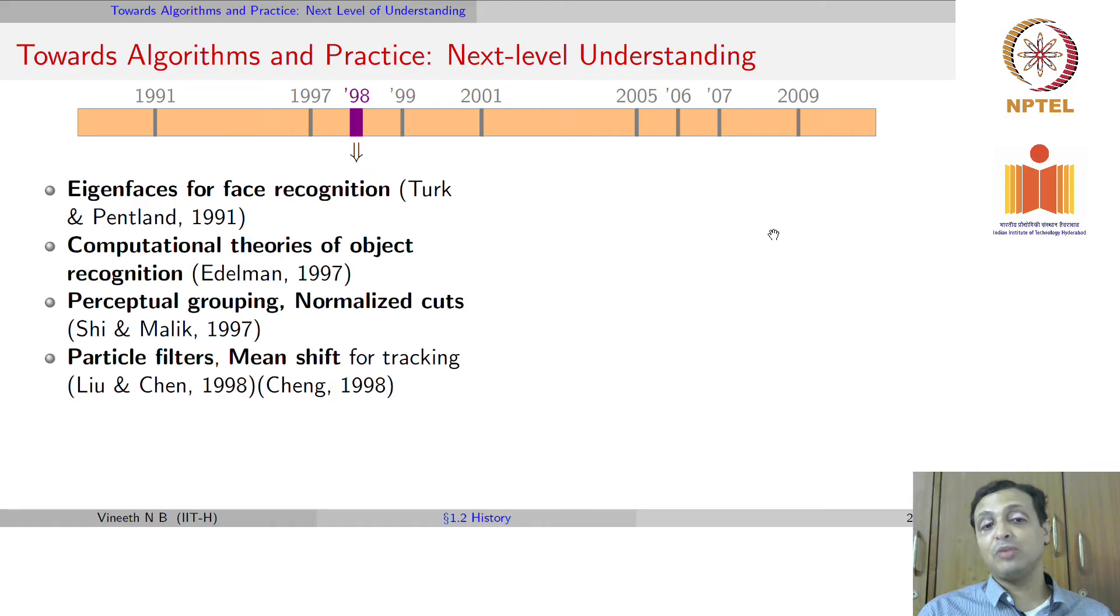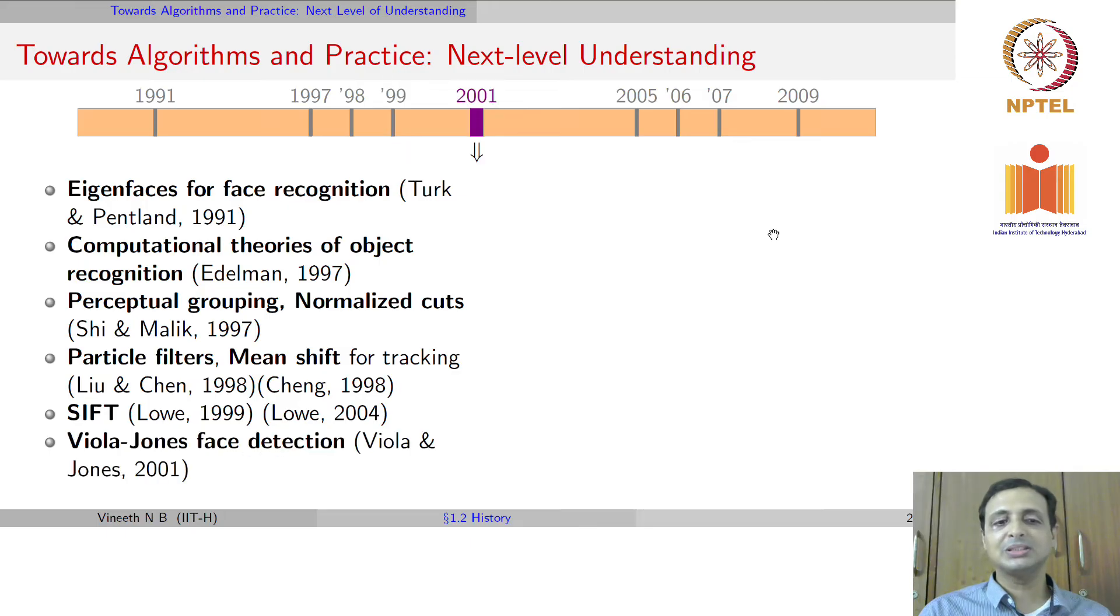Came particle filters and mean shift in 1998, scale invariant feature transform - we will talk about some of these methods in detail - which was an important image keypoint detector and representation method developed in the late 90s, early 2000s. Then Viola-Jones face detection came in the early 2000s. Conditional random fields, which was an improvement over Markov random fields.